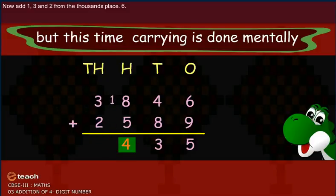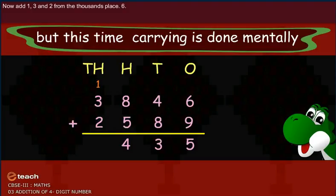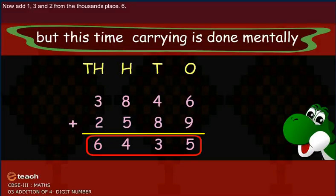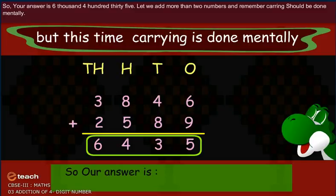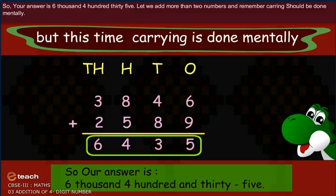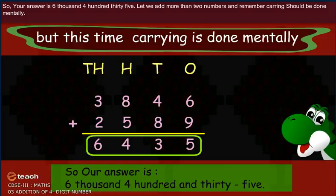Now add one, three and two from the thousands place. Six. So your answer is six thousand four hundred and thirty-five.